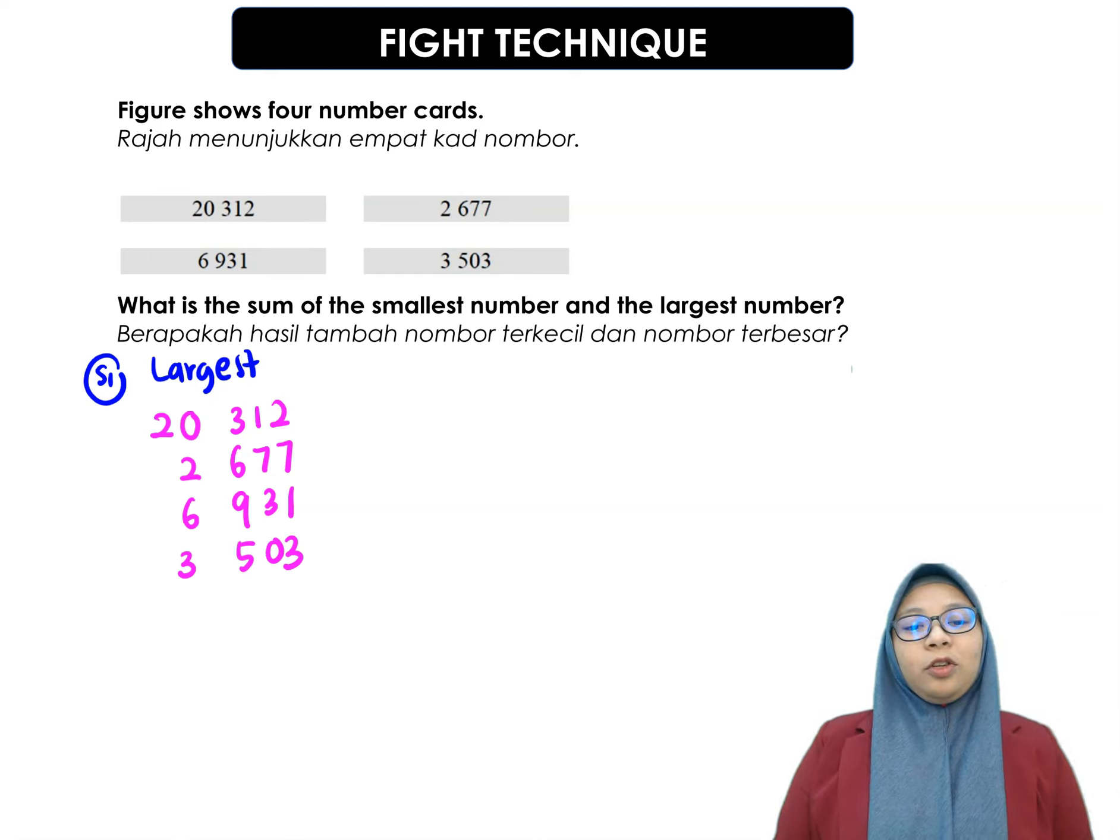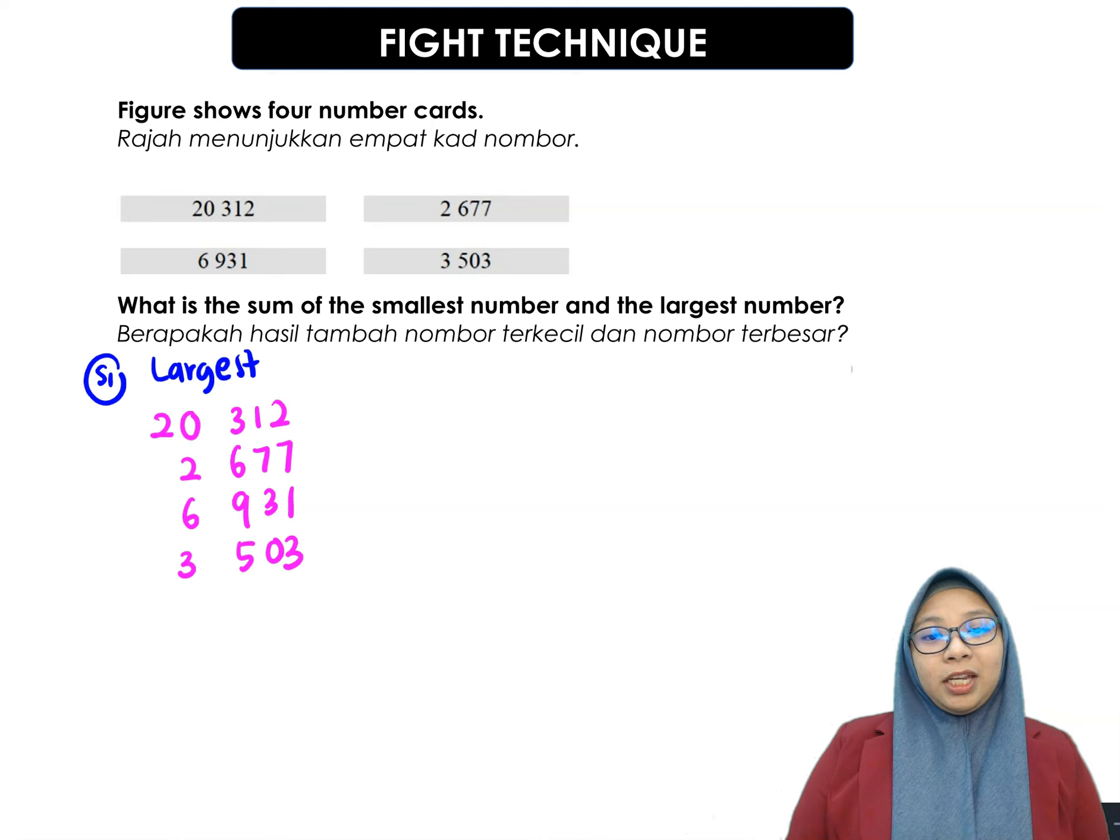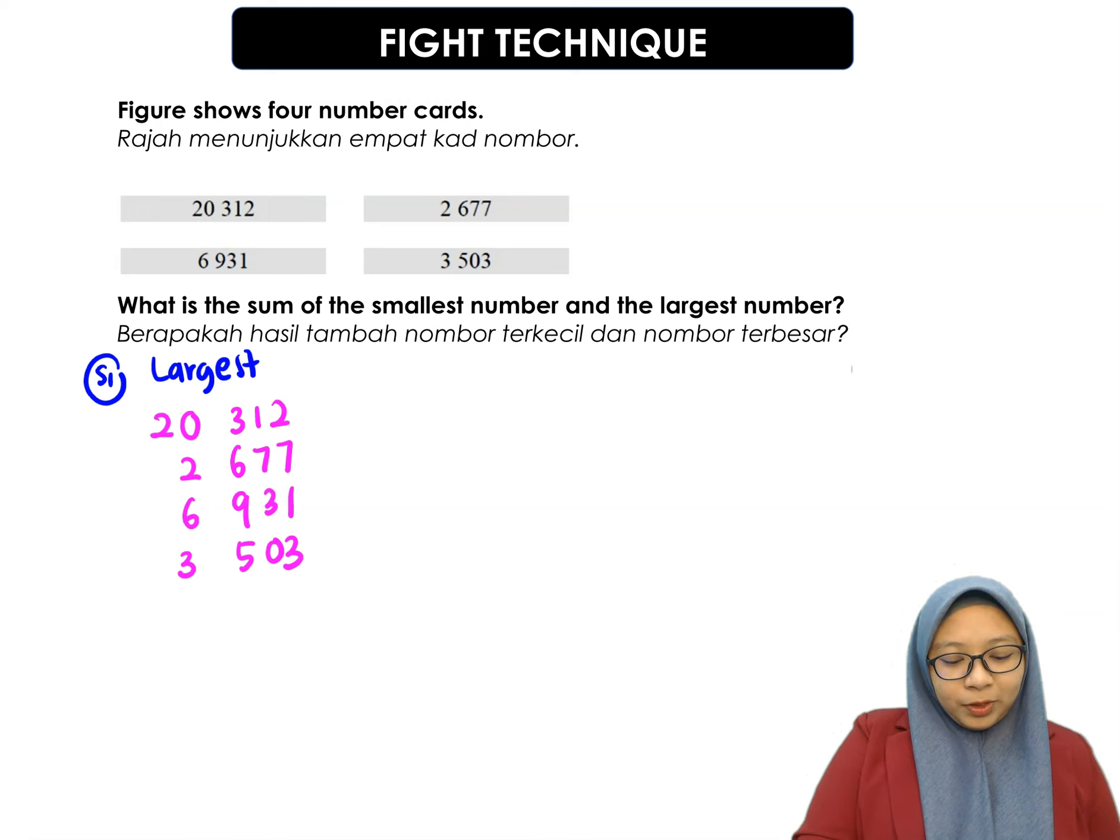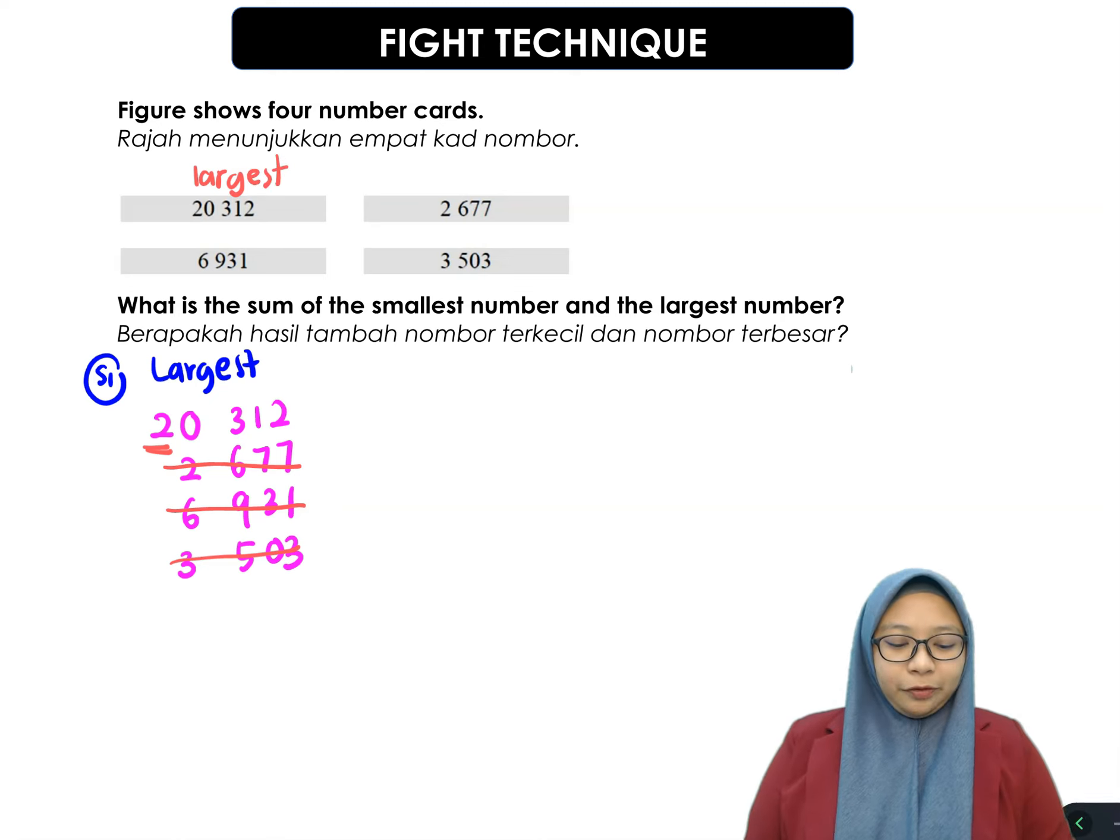So, to use fight technique, you have to fight using the place value. So, as you can see, in these four numbers, we only have one 10,000 place value. Means that 20,312 will be the largest number. So, cancel out the other numbers. Now we have the largest number is 20,312.